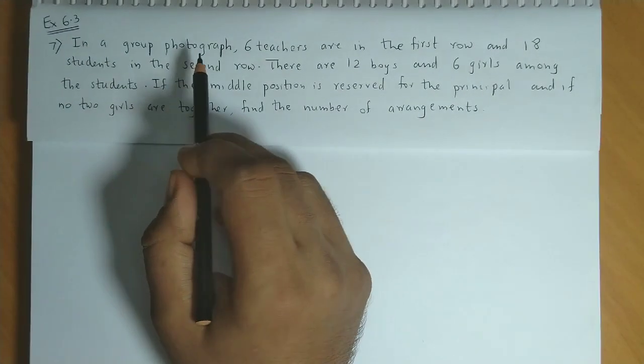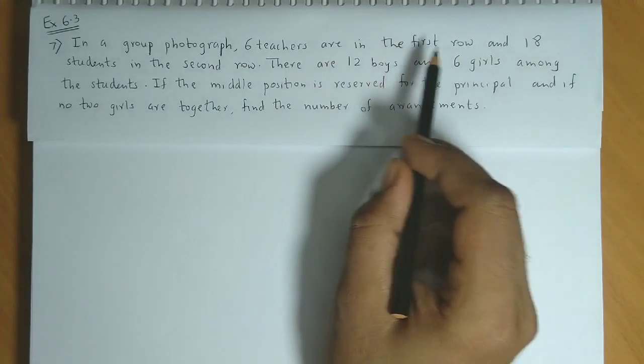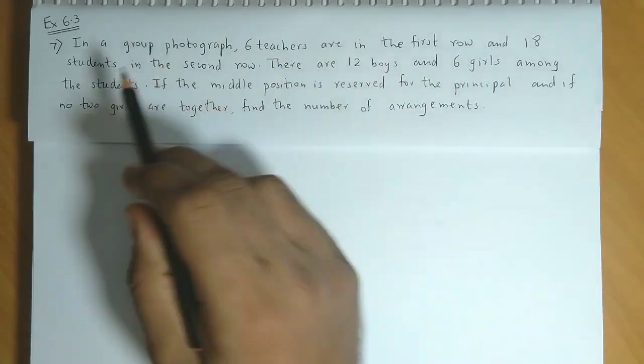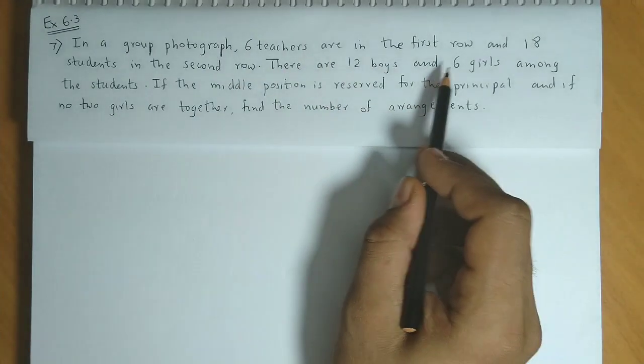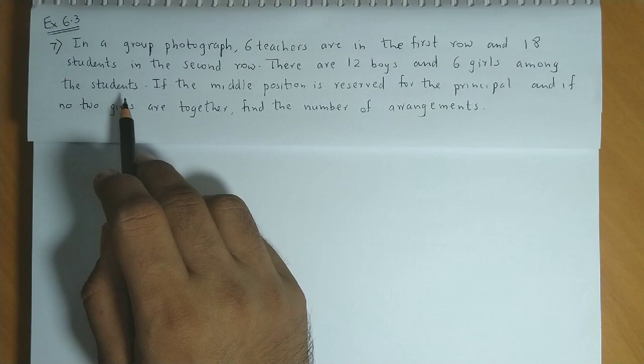In a group photograph, 6 teachers are in the first row and 18 students in the second row. There are 12 boys and 6 girls among the students.